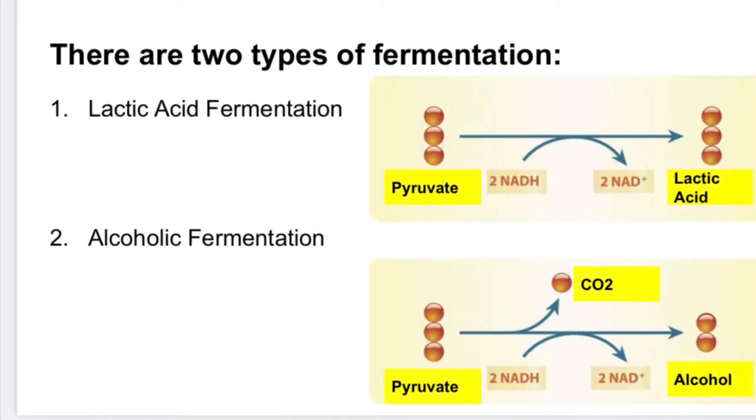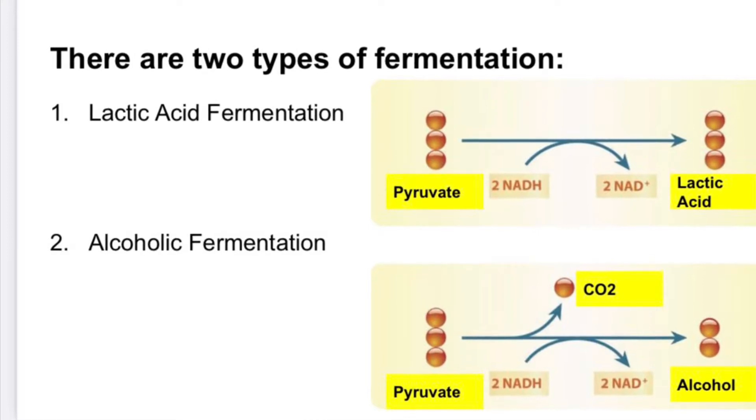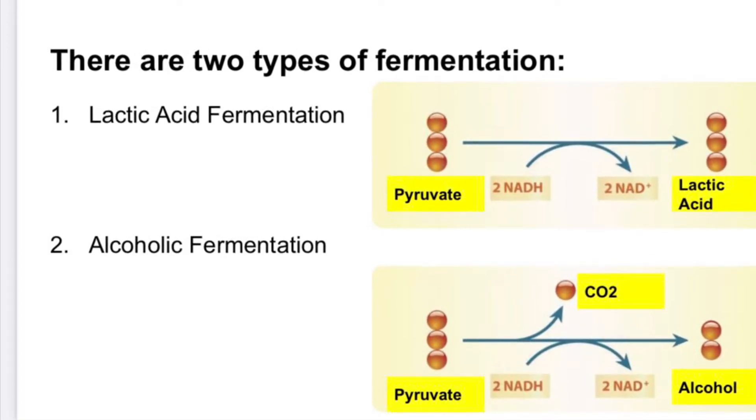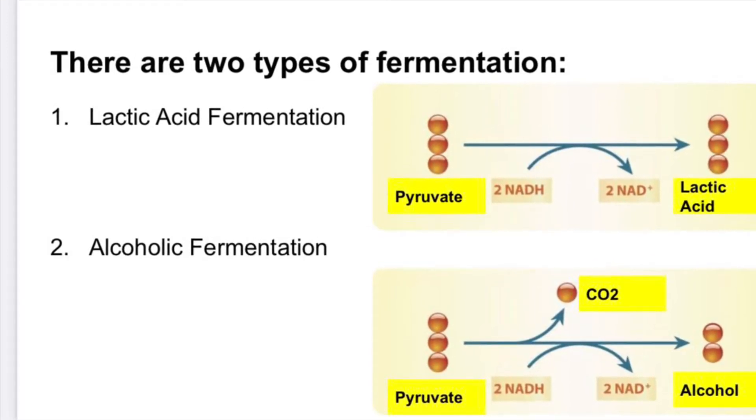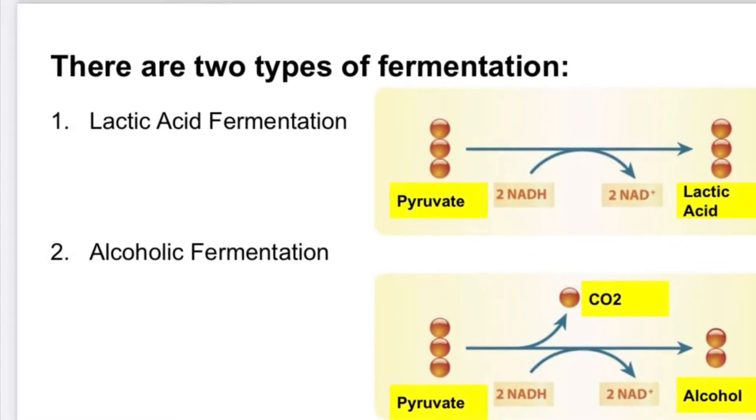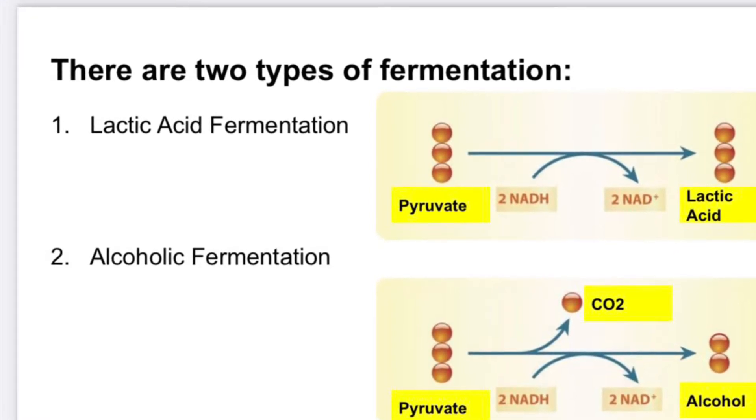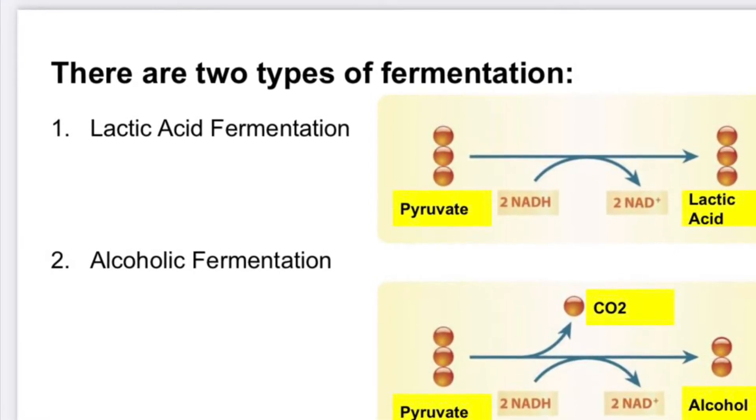If you remember from our class discussions, during alcoholic fermentation, glucose or sugar is broken down into pyruvate in the process of glycolysis. Then this pyruvate is broken down into carbon dioxide and an alcohol as a byproduct during the process of fermentation.